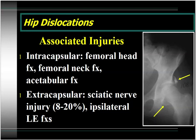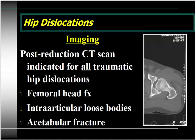Associated injuries with hip dislocations include both intracapsular and extracapsular injuries. The intracapsular injuries consist of femoral head fractures, femoral neck fractures, and acetabular fractures. We're also concerned about extracapsular injuries such as sciatic nerve injuries, which can occur in 10 to 20% of patients with hip dislocations — very important to do a focused neurologic exam — and ipsilateral lower extremity fractures. After reduction of the hip dislocation, the patient must have a post-reduction CT scan looking for intracapsular injuries, fracture of the femoral head, acetabular fractures, or intra-articular loose bodies that would lead to a non-congruent reduction.